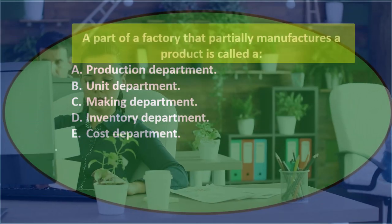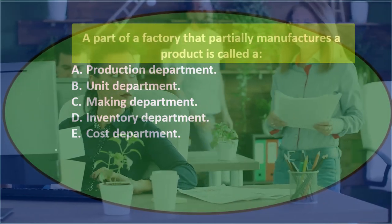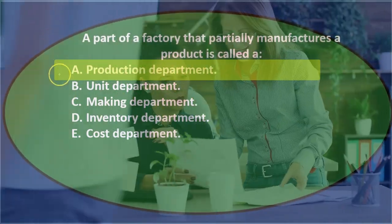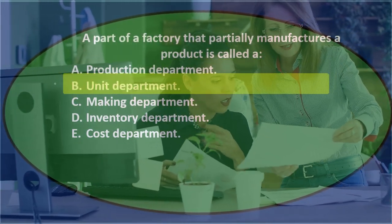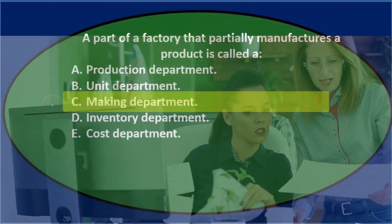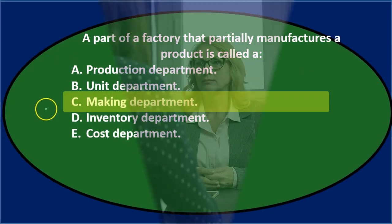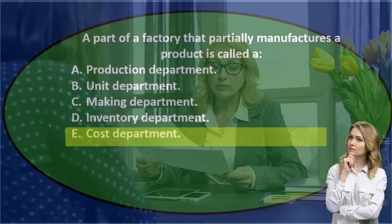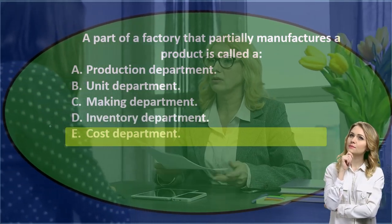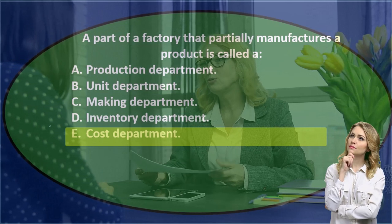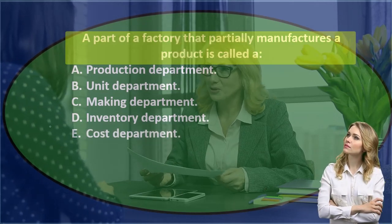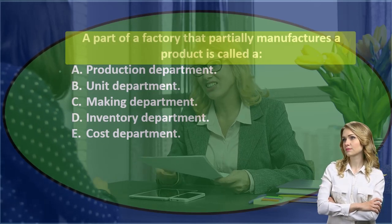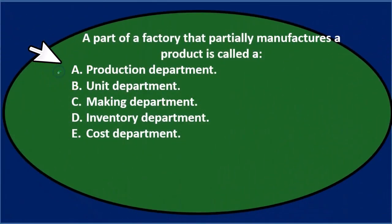Next question: a part of a factory that partially manufactures a product is called — A) a production department, B) unit department, C) making department, D) inventory department, or E) cost department. Let's use process of elimination. A production department sounds familiar and relevant — we're producing stuff — so we'll keep that.